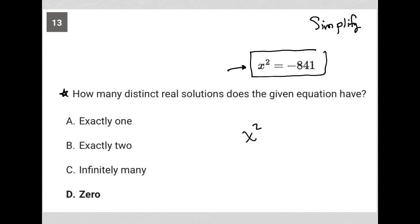So how do I simplify this? x squared equals negative 841. When I simplify it, I'd like to square root both sides in order to solve for x. So I have x is equal to, and then I have to deal with the fact that I have the square root of a negative number, which means we're going to have i root 841.